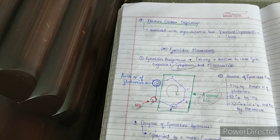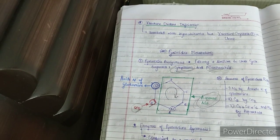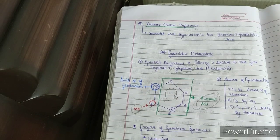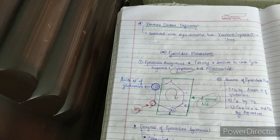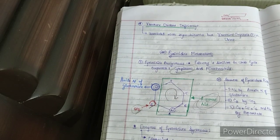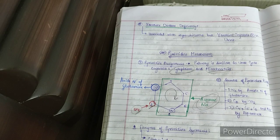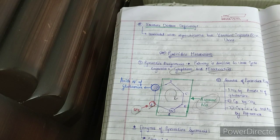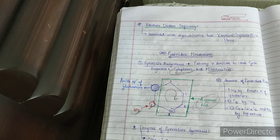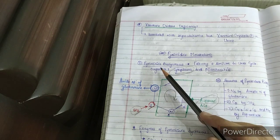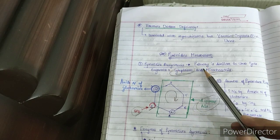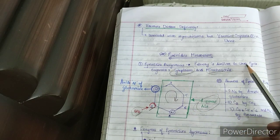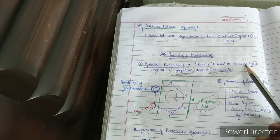Hello guys, this video is about pyrimidine metabolism. Like we did for purine metabolism — where I talked about de novo synthesis and the salvage pathway — this video will focus specifically on the de novo synthesis of pyrimidine. This pathway is very similar to the urea cycle, with many enzymes sharing similarity.